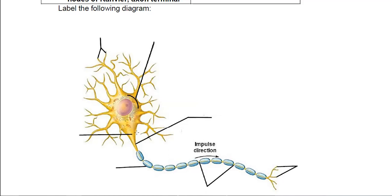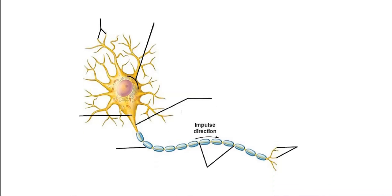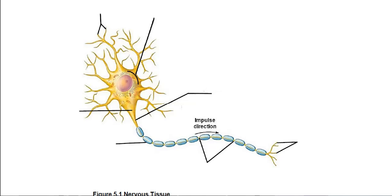As we continue down the axon hillock, we get this one very skinny appendage — this is the axon itself. Wrapped around the axon is the myelin sheath, which is essentially insulation that helps keep the electrical impulses inside. Those impulses run down to the very end, which is the axon terminal. There are also little gaps between the myelin sheath called the nodes of Ranvier.